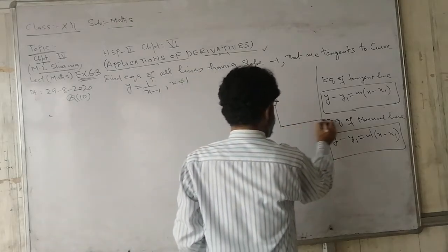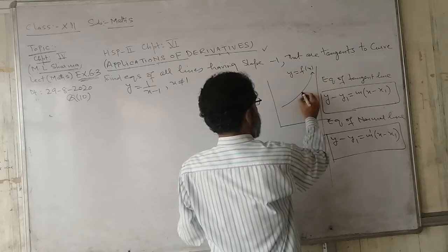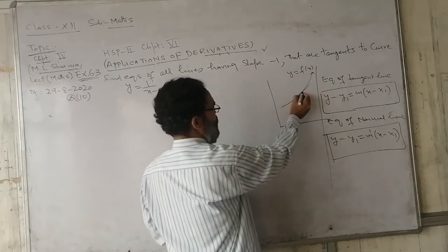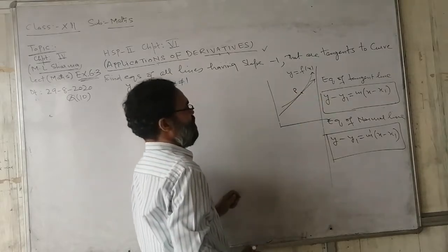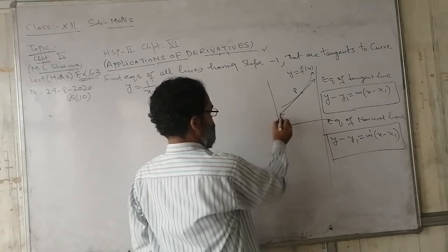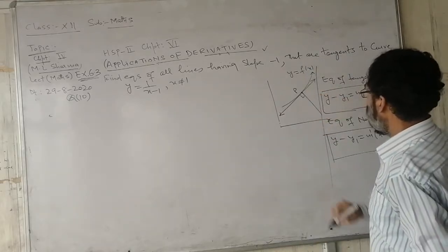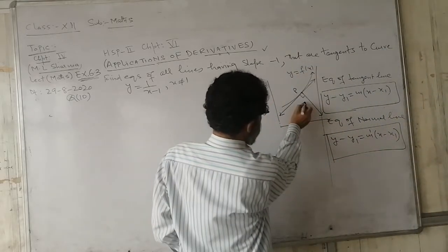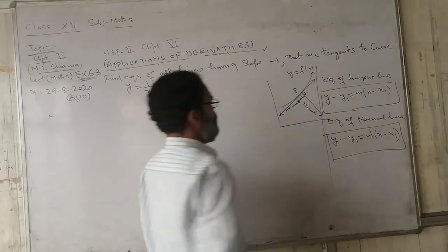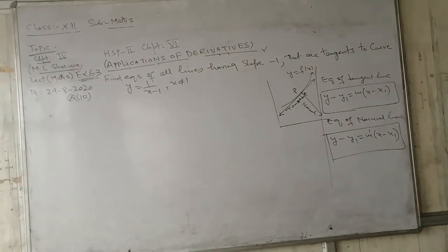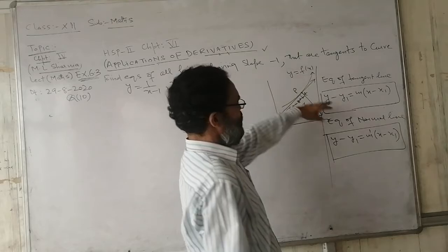In a diagram, if this is a curve whose equation is y = f(x), and this is a point at which a line meets, this is called a contact point. This is a tangent line, which meets the curve at one point. The other line drawn perpendicular to it is called the normal line. So tangent line and normal line are perpendicular to each other.